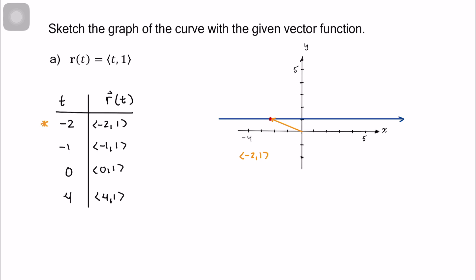Let's take a look at one more. Say when t equals 4, we have this ordered pair here of 4, 1. And the vector itself is 4, positive 1.